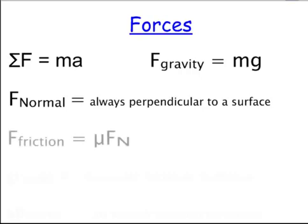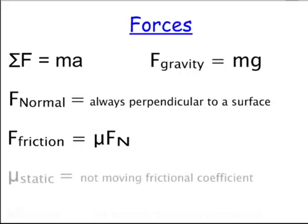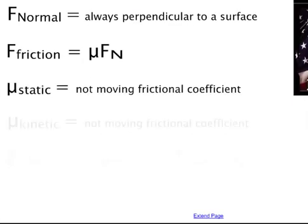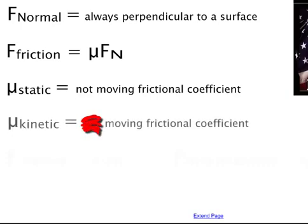We have the force of friction. Some surfaces have friction, and it's equal to a coefficient of friction — which is just a ratio — times the normal force. Ice would have a very, very low coefficient, almost close to zero. Sandpaper would have a coefficient close to one. There are different coefficients: a static coefficient and a kinetic coefficient. Static friction applies when you're not moving — you have to overcome static friction to start pushing something. Once the object is moving, you have to overcome kinetic friction, which is the moving frictional coefficient.